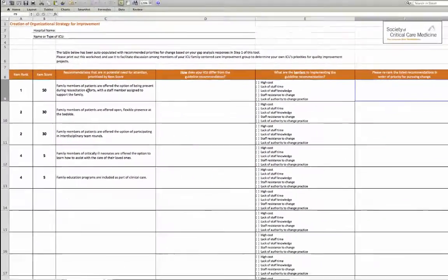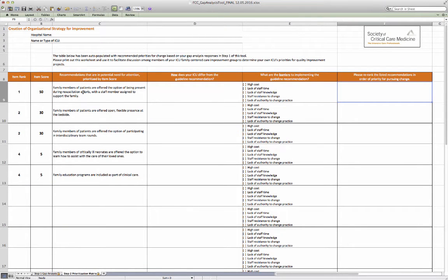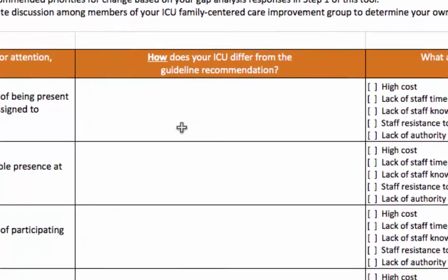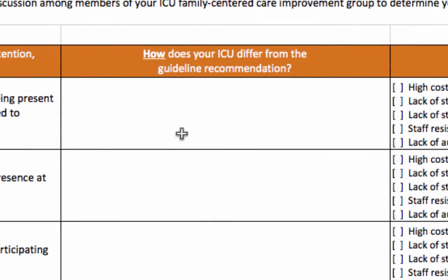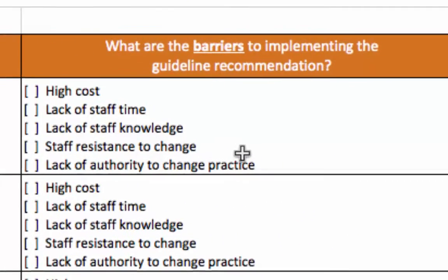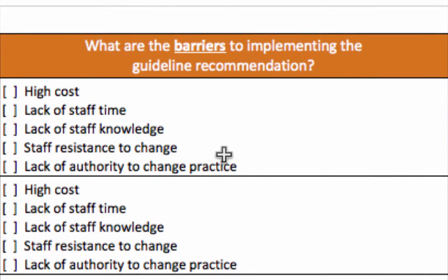You can now print out the second worksheet or project it during an ICU team meeting to facilitate discussion. For each of your five recommendations the spreadsheet asks three questions: First, how does your ICU differ from the guideline recommendation? Second, what are the barriers to implementing the guideline recommendation? Several common barriers are suggested here to consider in checklist form, but there may be others that you and your team may consider.